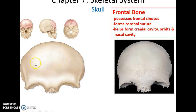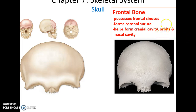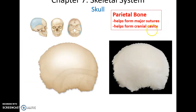The first bone is the frontal bone. The frontal bone possesses the frontal sinuses, helps form the coronal suture, helps form the anterior portion of the cranial cavity, the superior roof of the orbits, and of the nasal cavity.